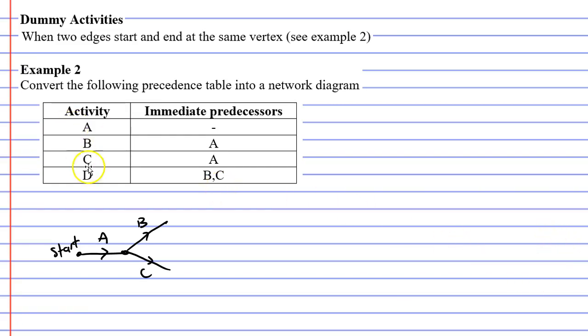Next you'll notice that activity D comes immediately after activities B and C. So we need activities B and C to connect to the same vertex. And once they are complete, activity D can come out from there. And then we need a vertex to show the completion of this project.